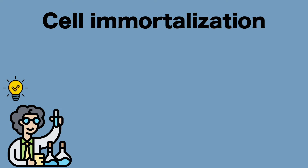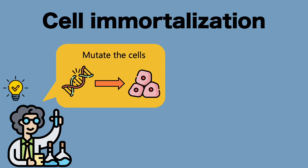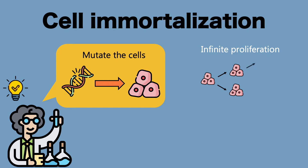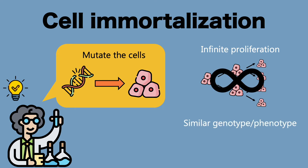So, in order to overcome these problems, scientists developed a method to make primary cells last longer. They did it by treating their cells so that they escape cellular aging and have infinite proliferation without altering the major functions of the cell. It is called cell immortalization. This method produces cells that multiply infinitely, are easier to culture in vitro, and possess similar genotype and phenotype to their parental cells.